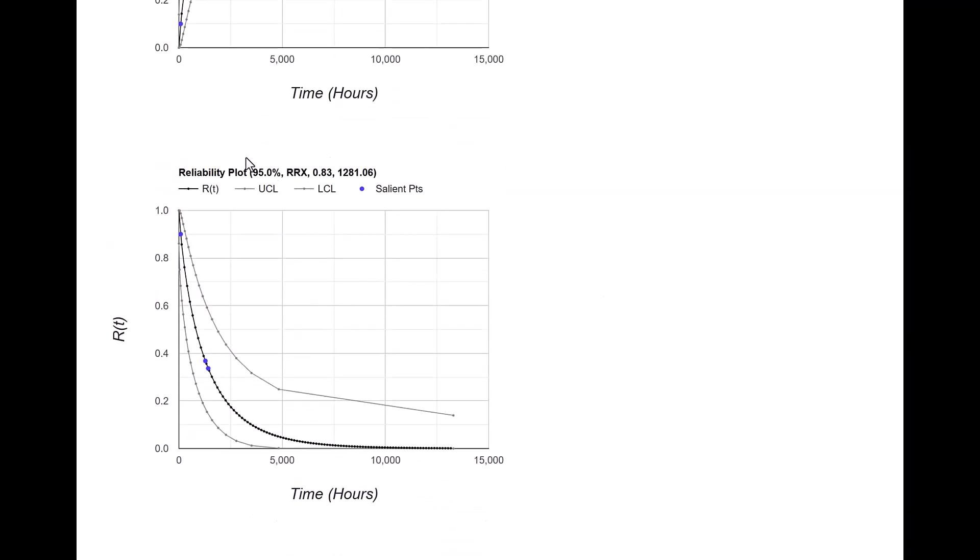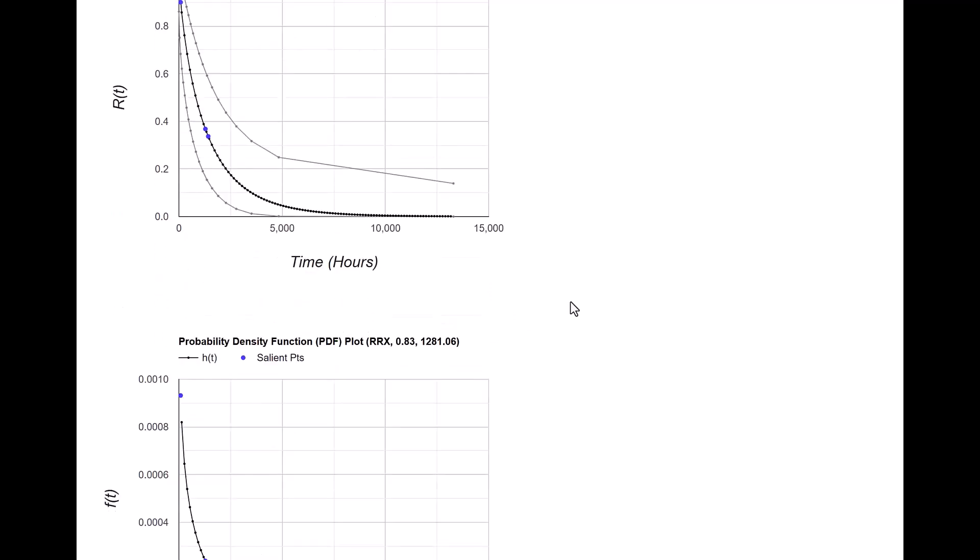Further scrolling down shows the reliability plot or the survival function. Again the middle plot is the estimated reliability plot and then you got upper confidence limit and lower confidence limit. The blue points show the characteristic life and the mean values.